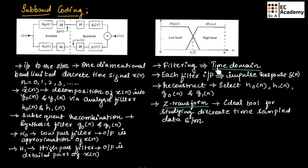All filtering is performed in the time domain by convolving each filter input with an impulse response delta(n). In order to reconstruct the input, we have to select h0(n) and h1(n) along with g0(n) and g1(n). To analyze subband coding, the z-transform is used.